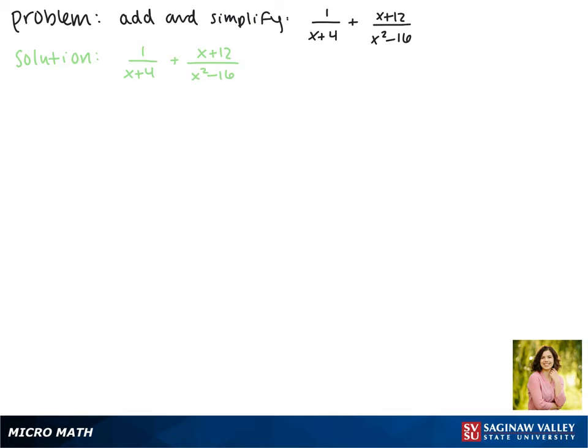Our first step here is to factor the denominators. Our first term's denominator can't be factored so that's going to stay the same. In our second term, this is the difference of squares, so we can make this into x plus 4 times x minus 4.